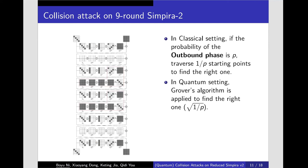In quantum setting, we can apply Grover algorithm to find the right one. The query complexity is the square root of 1/P.